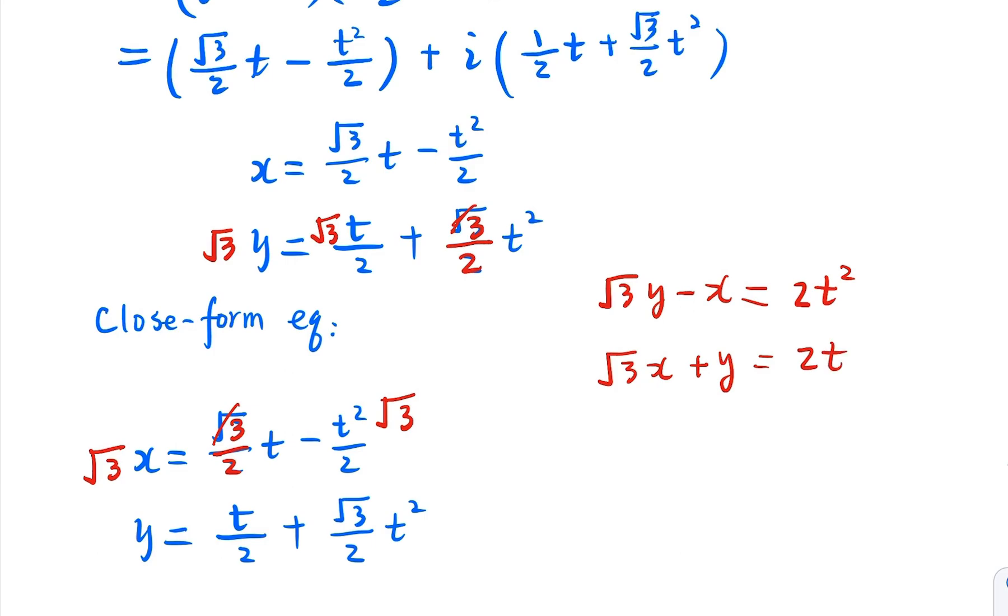So if you square the second one, what do you get? You get the square root of 3 x plus y. And then you try to square it. You're going to equal 4 t squared. So the 4 t squared, which means equation 1 times 2. So it's equal to 2 square root of 3 y minus x. So this equation, we cancel t. So that would be the equation, close form equation, for the pink curve.